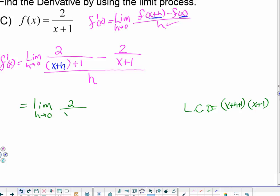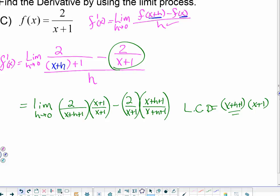My LCD is going to be x plus h plus 1 times x plus 1. So this is going to be 2 over x plus h plus 1 times x plus 1, minus 2 over x plus 1 multiplied by x plus h plus 1 over x plus h plus 1. I now have a common denominator. Don't forget that this was all over h. I do not see an advantage to foiling that out at this time.